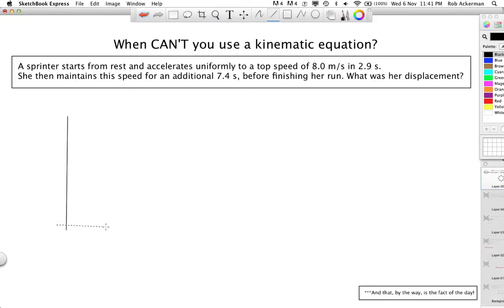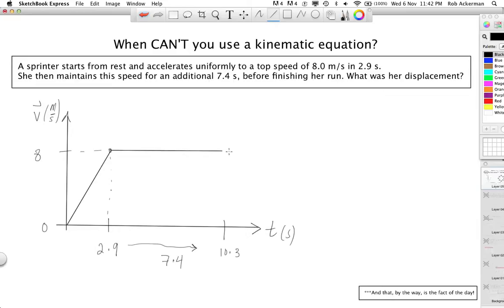Maybe I can show you best what I'm talking about if I draw a graph. And the graph, as you might have guessed, is going to be a velocity graph. Let's see. She goes from 0 up to 8 meters per second in a time of 2.9 seconds. And then she continues on for 7.4 more seconds, which if I do my math correctly, that brings you up to 10.3. These are seconds, by the way, and this is meters per second. Now, what did we know about the motion? She accelerated uniformly, which means I'm allowed to draw a straight line going up. And then she maintained a constant velocity, so I can do that.